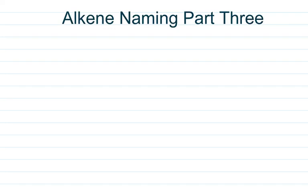Welcome back to Underground Science. In this video we'll continue practicing naming alkenes, specifically focusing on trans, cis, E, and Z. Over the next few videos we're going to go over stereoisomers — things like enantiomers, diastereomers, meso compounds. In this video the only thing we need to know about stereoisomers is cis and trans, which are types of diastereomers.